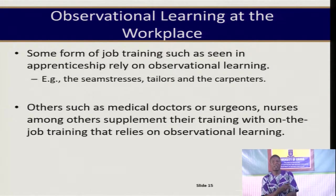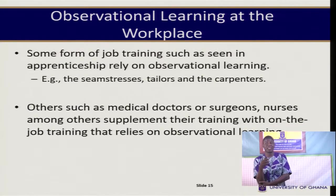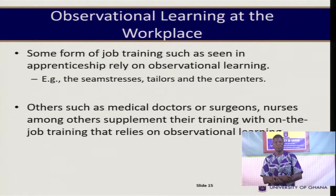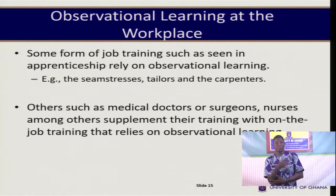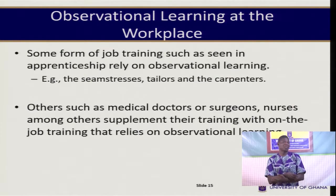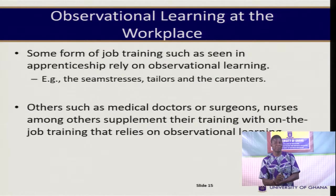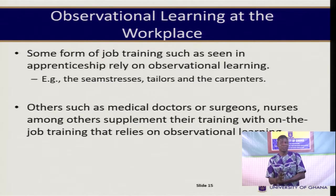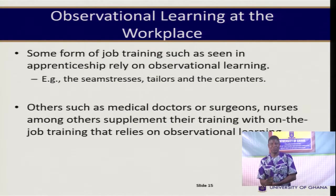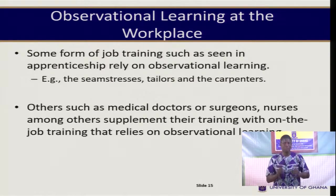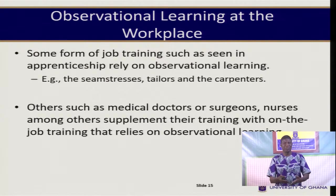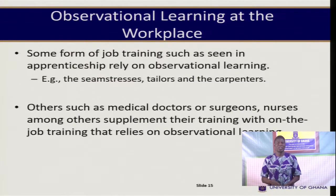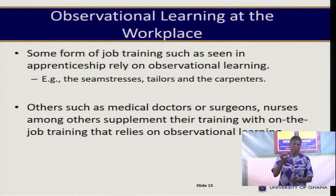When we consider the workplace, we see various forms of observational learning. Some forms of job training, such as apprenticeship, rely more on observational learning — tailors, carpenters, mechanics and so on. They observe what their masters do, and based on this observation, they are able to correct their mistakes and gradually become proficient in whatever they do.